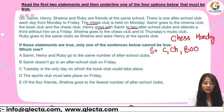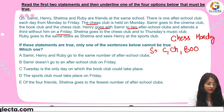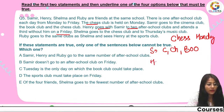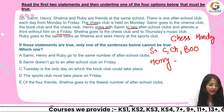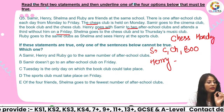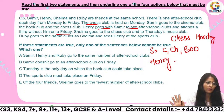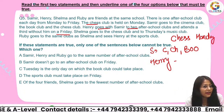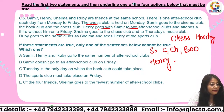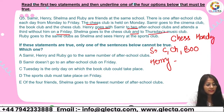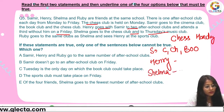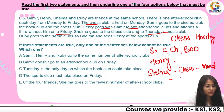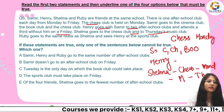Henry goes with Samir to two after-school clubs and attends a third one without him on Friday. That means Henry does not attend whatever club is on Friday with Samir. Shalma goes to the chess club and to Thursday's music club.